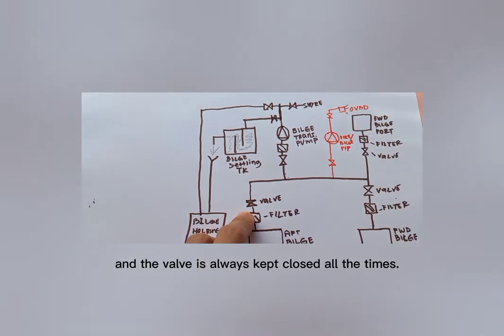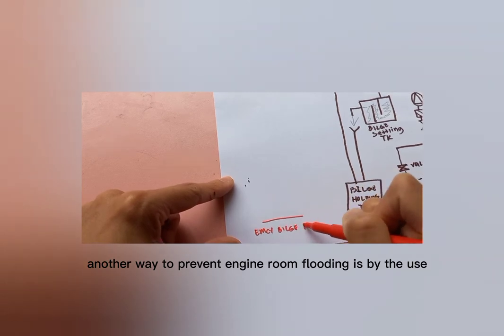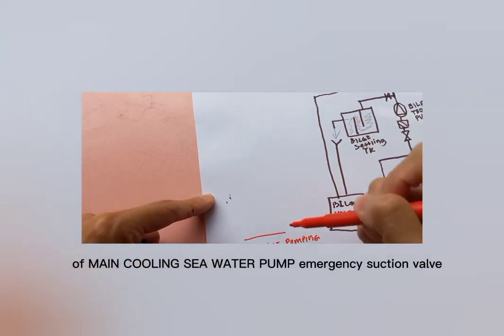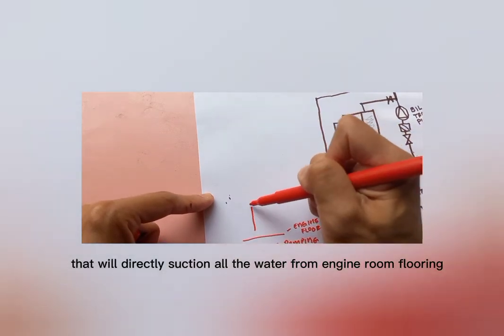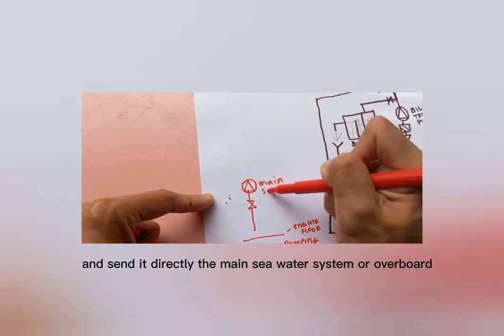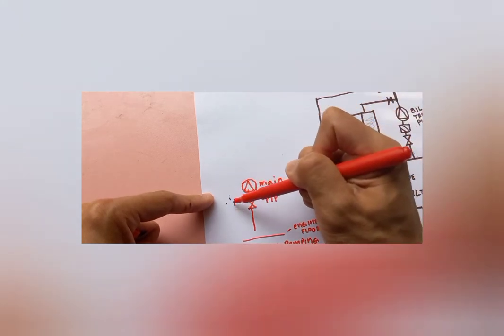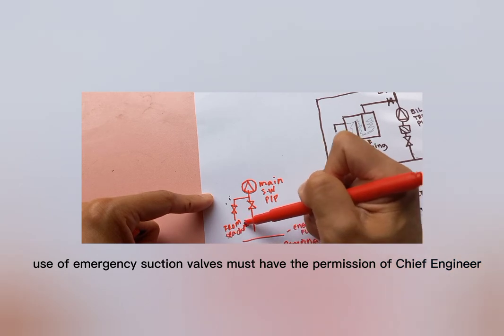Another way to prevent engine room flooding is by the use of main cooling sea water pump emergency suction valve, that will directly suction all the water from engine room flooring and send it directly to the main sea water system or overboard. Use of emergency suction valves must have the permission of chief engineer.